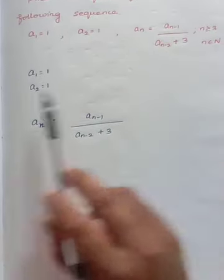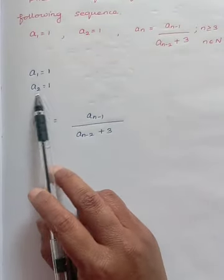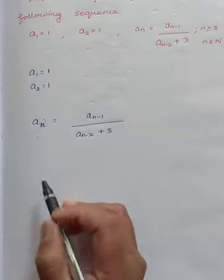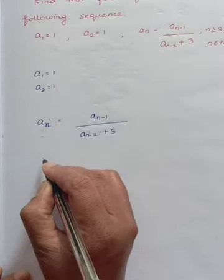So what is given is A1 is 1, A2 is 1. Now let us find, in the general term, let us write, find A3.